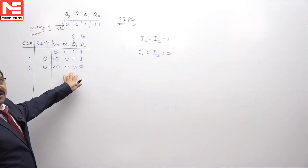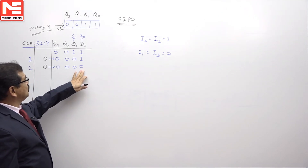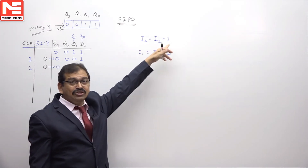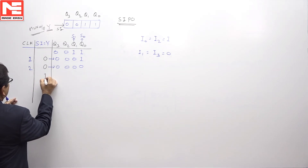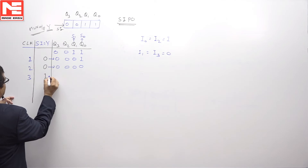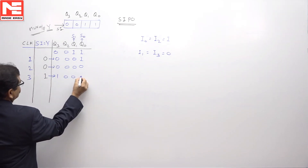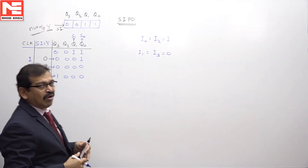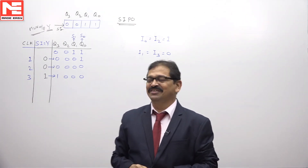After the second clock pulse, the register shifts again. S1 and S0 are now 0 and 0, so the selection is for line 0. Line 0 is connected to 1, hence the serial input is 1. After the third clock pulse, the register content reads 1, 0, 0, 0. The circuit is not back to the initial state, so we continue applying clock pulses.